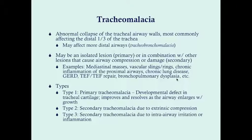In the literature, tracheomalacia is split into types corresponding to cause. Type 1 is primary tracheomalacia — a developmental defect in tracheal cartilage that improves as the airway enlarges with growth; typically no intervention is needed. Type 2 is secondary tracheomalacia due to extrinsic compression from a mass or vascular ring. Type 3 is secondary tracheomalacia due to intra-airway irritation or inflammation. These can also simply be called primary or secondary.